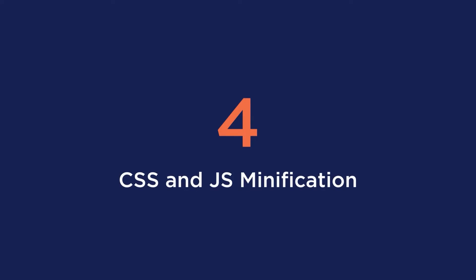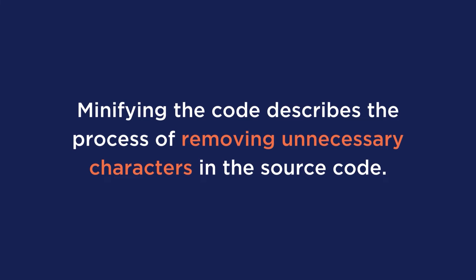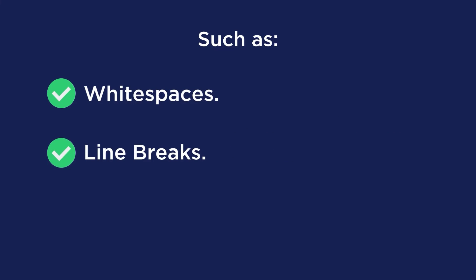Fourth is CSS and JS minification. Minifying the code describes the process of removing unnecessary characters in the source code, such as white spaces, line breaks, comments, and so on. By trimming the code, it allows your critical requests to be shorter, resulting in a speed boost for your website.